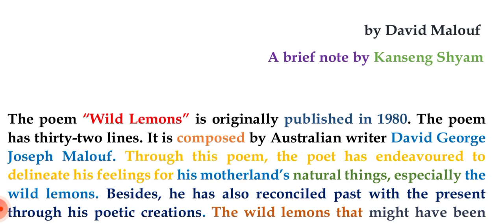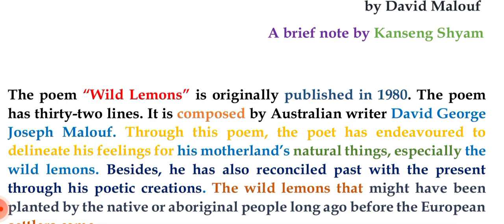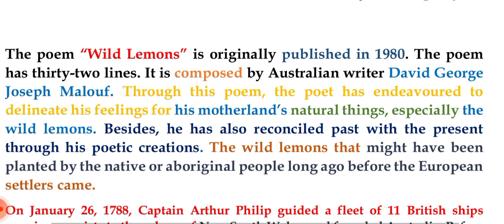In the poem, he also mentions a line that may be related to the Aboriginal Australian community. He suggests that the wild lemons might have been planted before the European settlers came, hinting at the significance of the Aboriginal people. I will try to give you a little detail about the Aboriginal peoples of Australia, and those wild lemons may have been planted by the native or Aboriginal people long before the European settlers arrived.